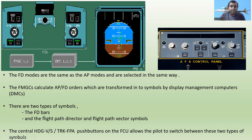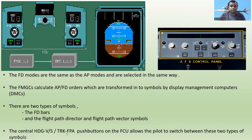There are two types of symbols: the flight director bars, and the flight path director and flight path vector symbols. You can see both types displayed on the PFD.